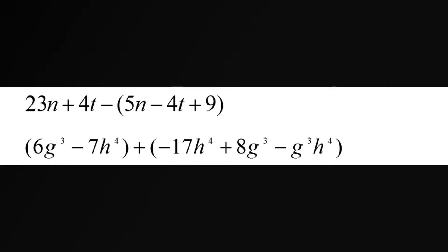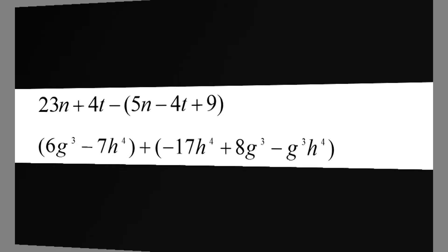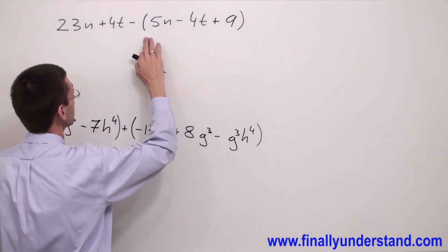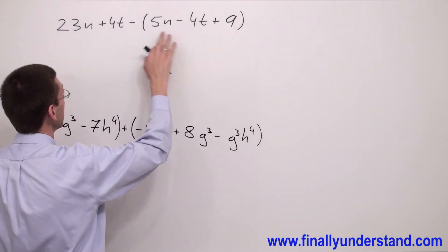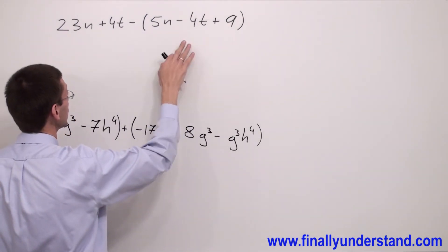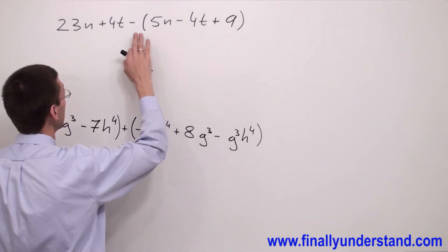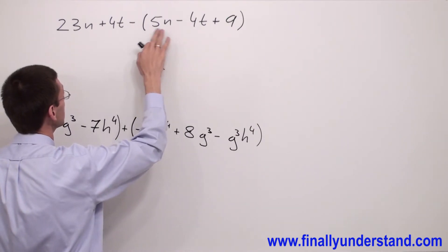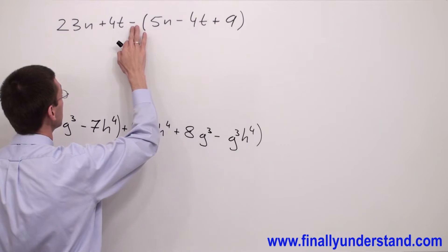Anytime you have a problem like this, you're supposed to eliminate the parenthesis first. We can eliminate the parenthesis first by multiplying every single sign inside of the parenthesis by the sign which is at the front of the parenthesis.